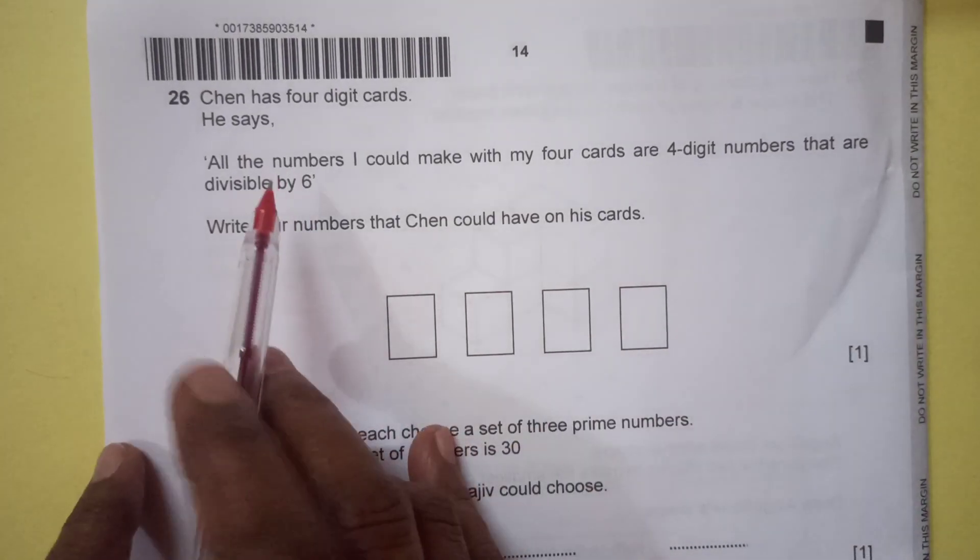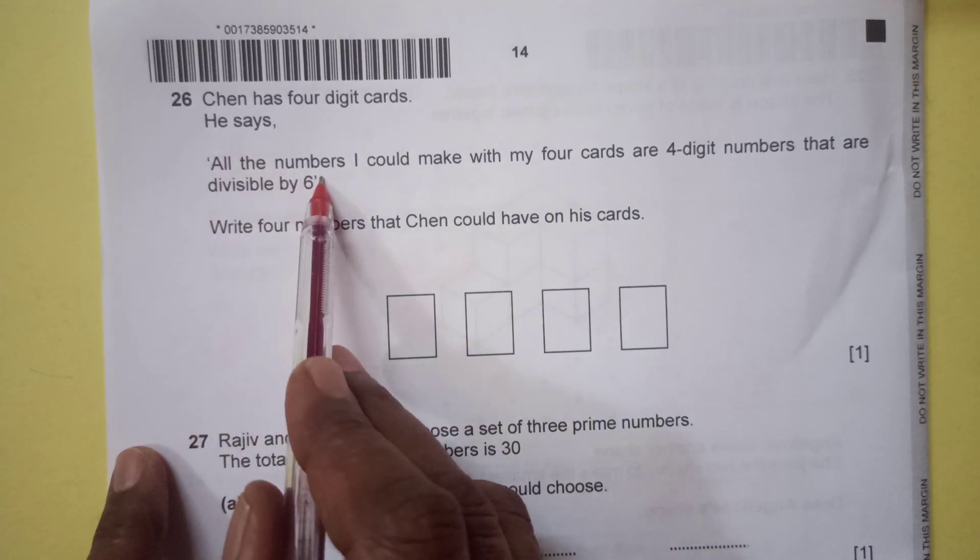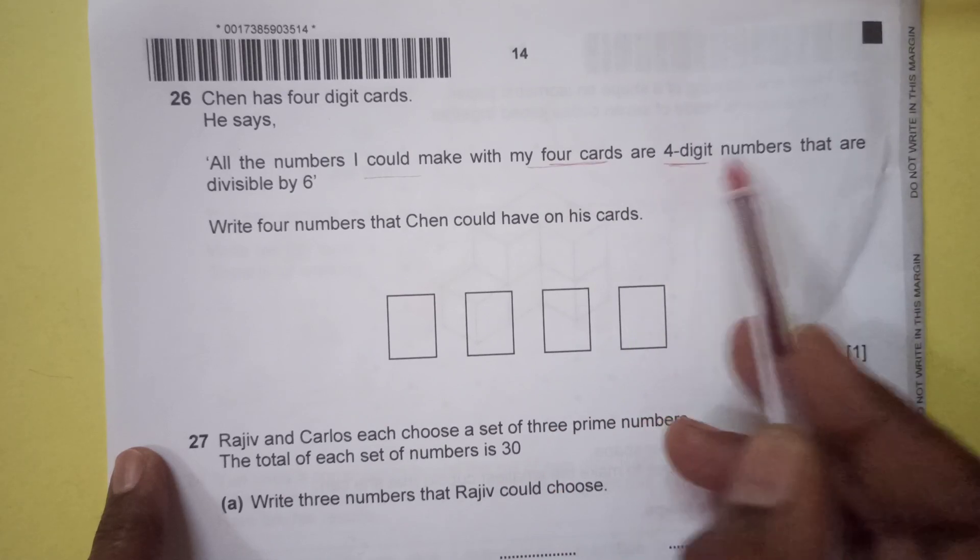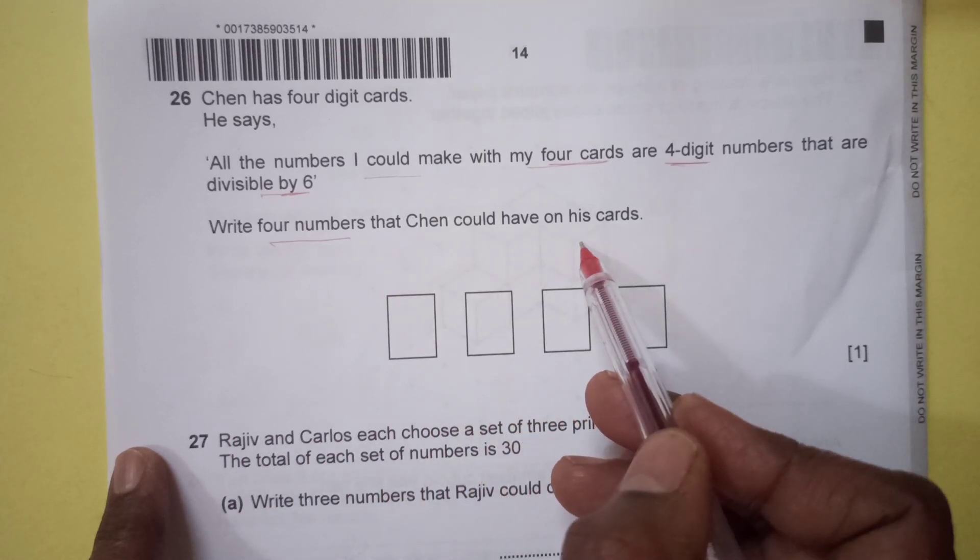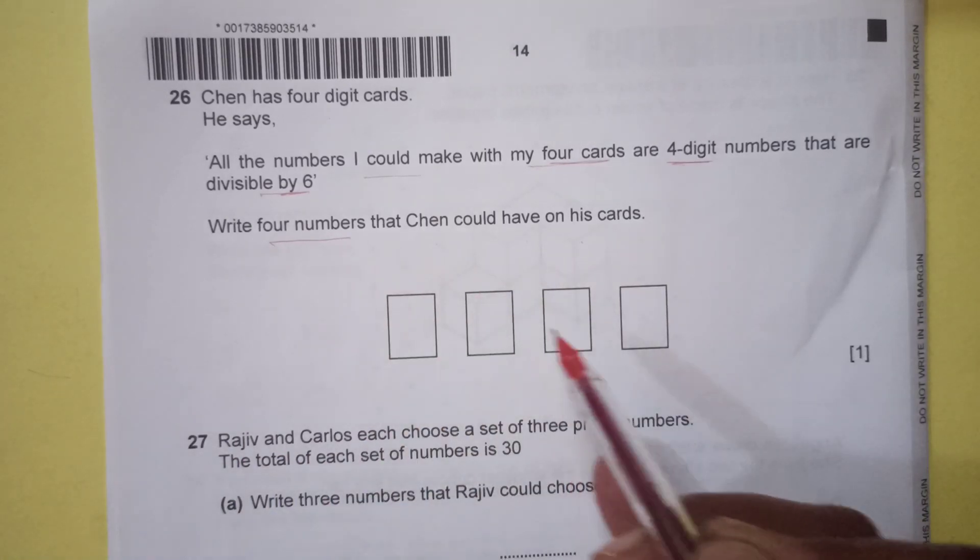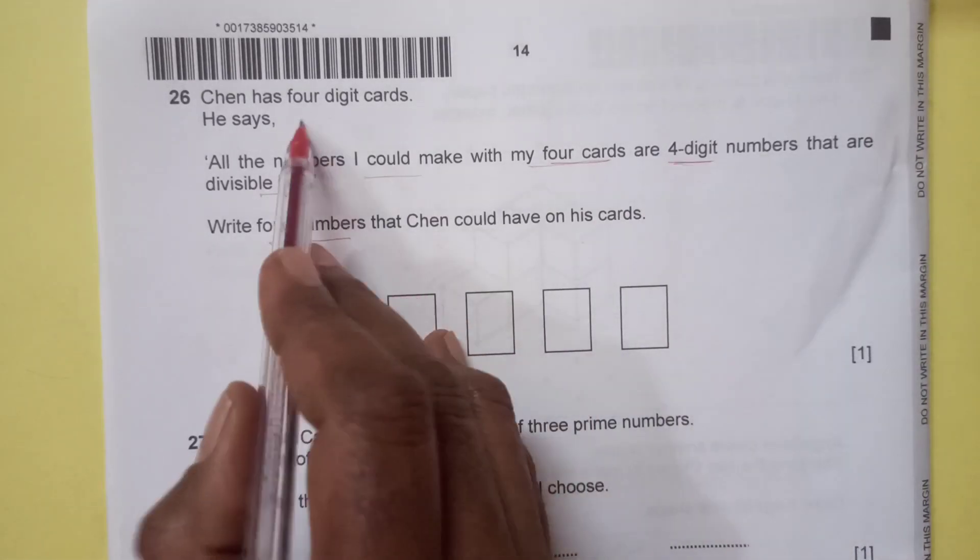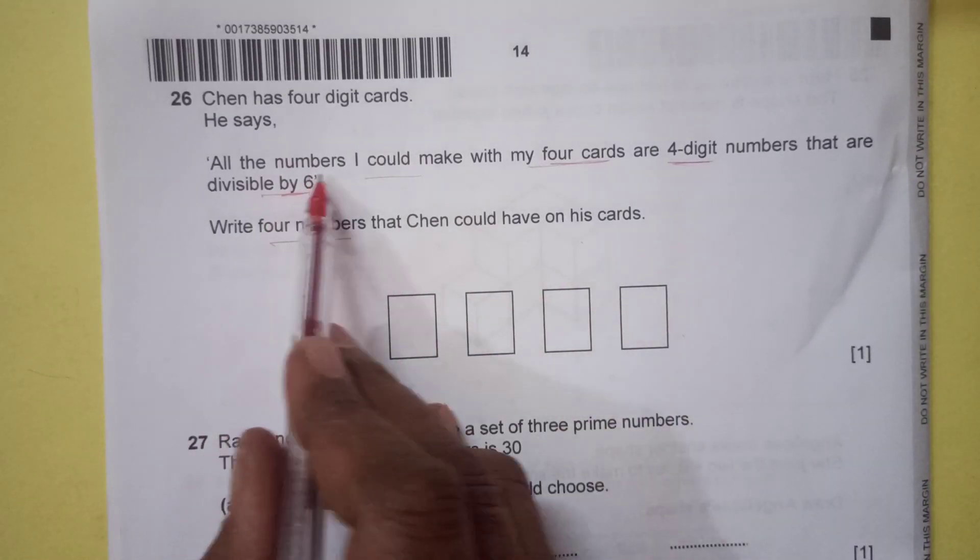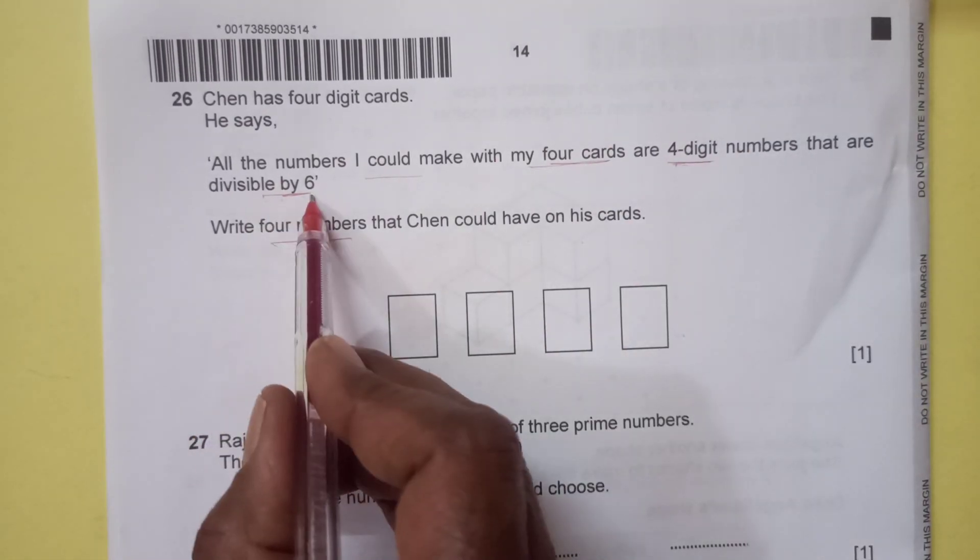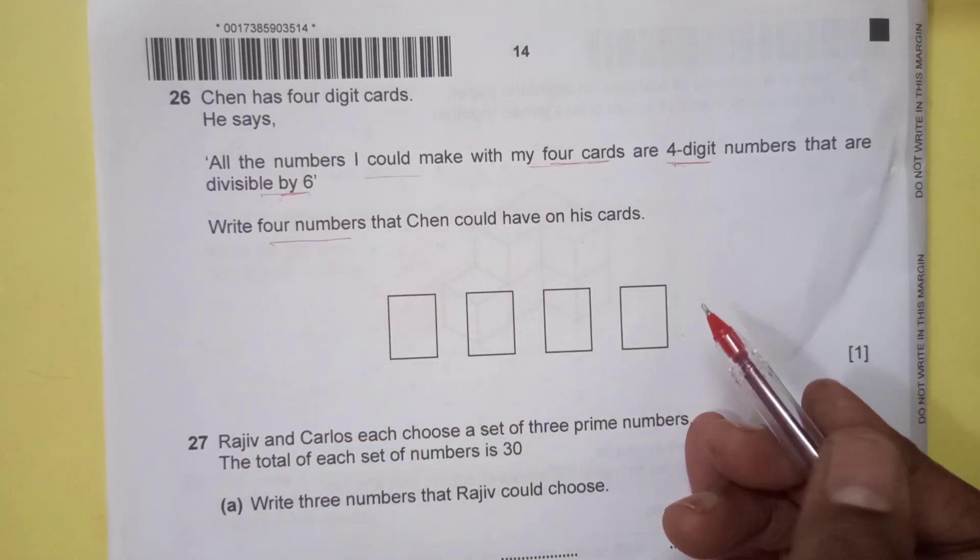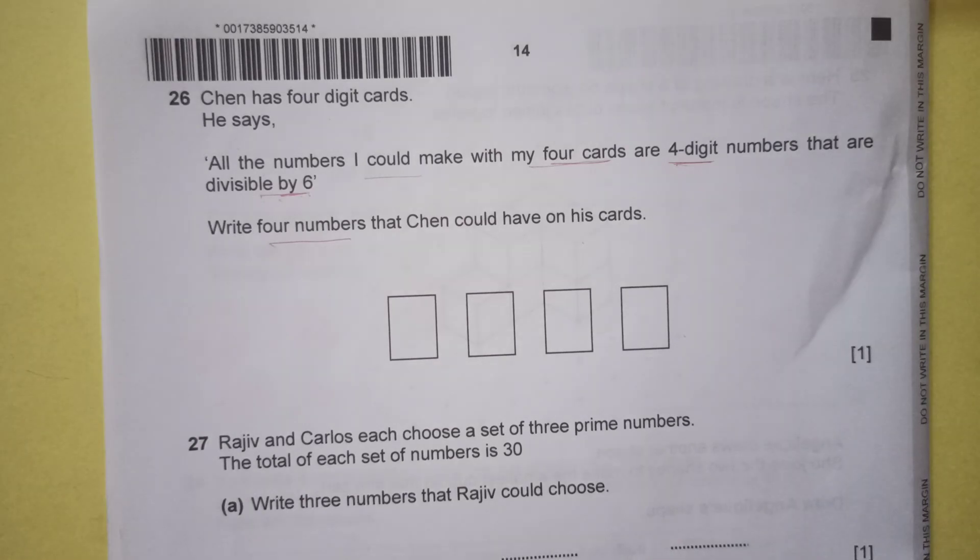Number 26. Chen has four digit cards. He says all the numbers I could make with my four cards are four digit numbers that are divisible by six. Write four numbers that Chen could have on his card. We need to have the conditions that meet whatever is given to us. Four digit number, four cards are given. Any number that is divisible by six, we can take the number. It may have different answers.